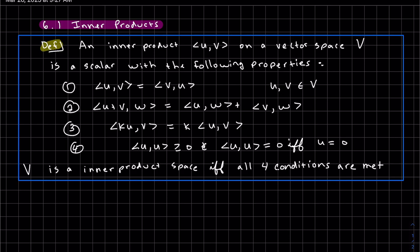So 6.1, we're going to talk about inner products. What is an inner product? An inner product is this notation, u v, on a vector space V, is actually a scalar.